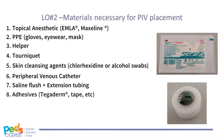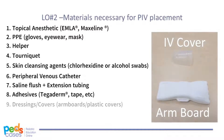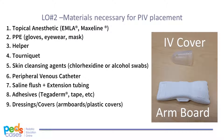Eighth, you will need tape or commercial adhesives, such as Tegaderm, to secure the catheter in place. It is helpful to have these ready ahead of time so there is no delay in securing the IV once it is in place. Ninth, dressings and covers. Arm boards to stabilize limbs are particularly helpful in infants and young children, as are plastic covers to help prevent the IV from becoming dislodged.